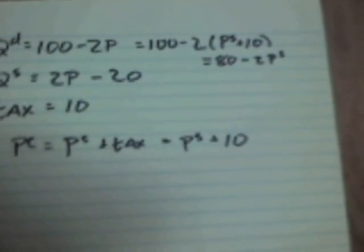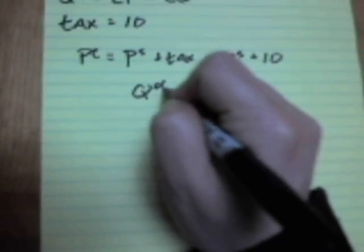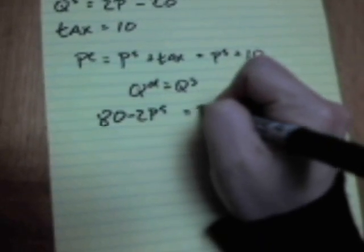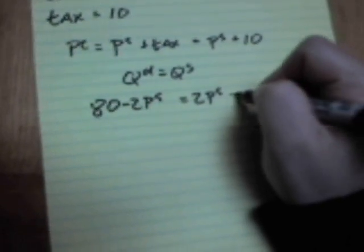Then equilibrium works the same as it always does. Quantity demanded equals quantity supplied. So what do we got? 80 minus 2PS is equal to 2 times the price producers get to keep, minus 20.